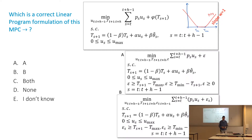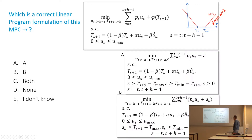The majority says B, which is correct. What's the difference between the two? Here I've replaced the phi by an epsilon. Here also, but here I have an epsilon for every time, for every s. Here I have a global epsilon. So here I'm saying epsilon is larger than those three things — and here also, but epsilon_s.